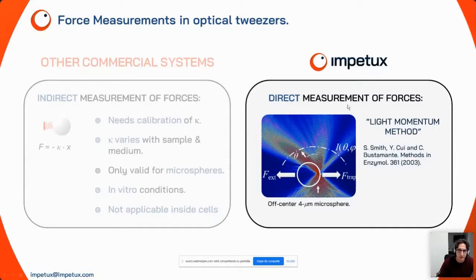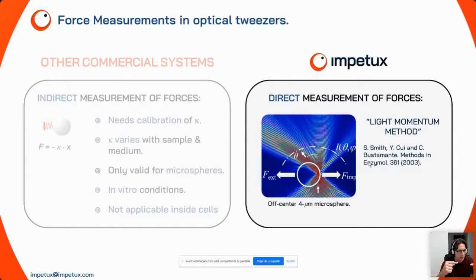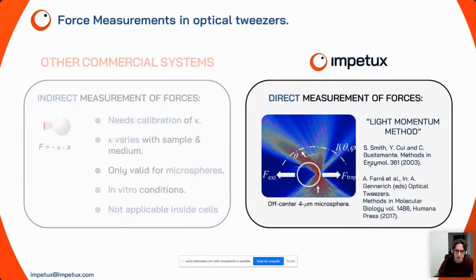If you can look at the transmitted light pattern and measure the momentum changes, you have a direct route to force. This method was initially proposed by Steven Smith and Carlos Bustamante from Berkeley, using a two-laser counter-propagating configuration. Our contribution has been to demonstrate that this momentum method can be applied to a single-laser optical trapping system, and this is what we have patented and protected.